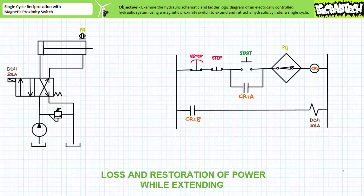Note that this single cycle reciprocation circuit featuring the magnetic proximity switch, as well as our previous one featuring the physical limit switch, both exhibit low or no voltage protection characteristics. Consider the behavior of three-wire control systems during an unexpected power outage. If the system was in the act of extending and experienced a sudden loss of pilot power, the coil of CR1 would be de-energized and all associated contacts CR1A and CR1B would return to their deactivated open state. When CR1A opens it removes the holding circuit. When CR1B opens, DCV1 Sol A is de-energized and DCV1 returns to the spring offset cross-connect position. If primary hydraulic power was still present the cylinder would retract; if also lost, the cylinder would stall in position.